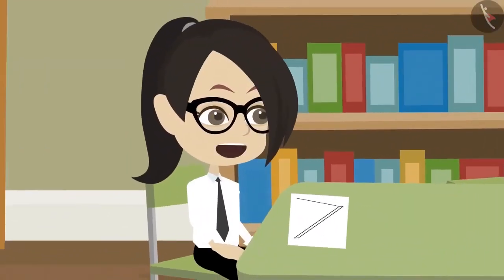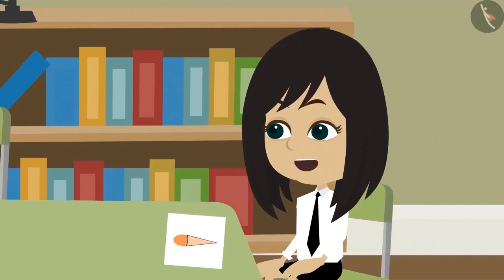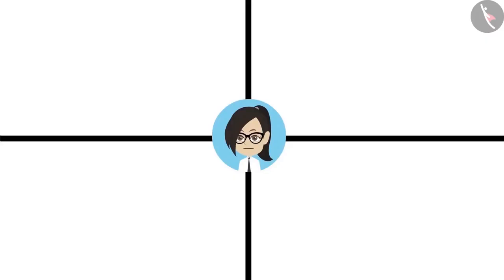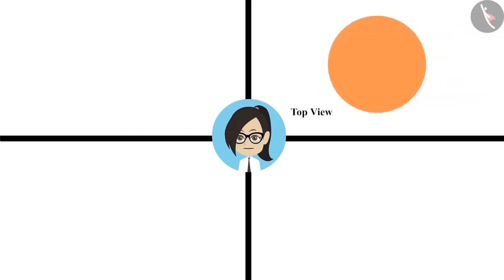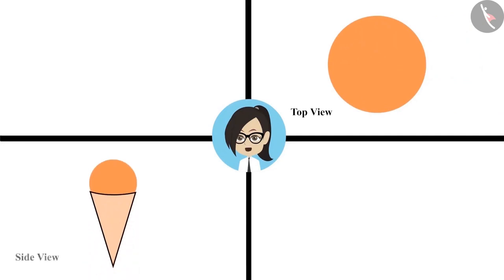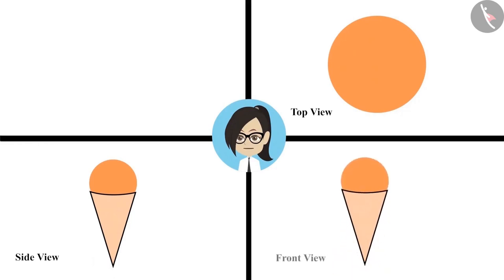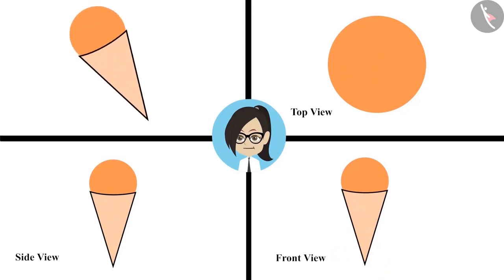I have completed my drawing. Even I am done. Look. First let me see what you have made. Its top view is in the shape of a circle. And its side view looks like an ice cream cone with ice cream in it. And its front view is also the same as the side view. This is definitely an ice cream cone.